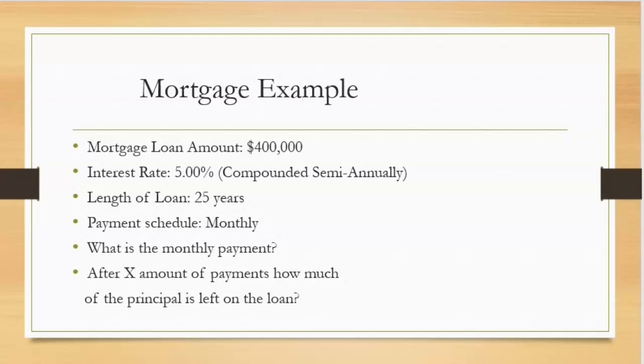This might be a typical example you might get in a textbook or on some examination question. You have a loan amount for a mortgage of approximately $400,000. The interest rate on this mortgage is 5%, which is compounded semi-annually. You're going to borrow this money for 25 years. The payment schedule that you're going to pay this loan back is on a monthly basis. And the question might simply ask you, what is the monthly payment that you will be required to pay this loan?